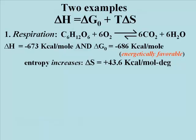Here are two familiar examples. For respiration, the enthalpy change is minus 673 kilocalories per mole of glucose burned, and the standard free energy change delta G0 works out to minus 686 kilocalories per mole of glucose burned — measured from the concentrations of CO2, oxygen, glucose, and water at equilibrium. Solving the equation delta H equals delta G0 plus T delta S for delta S gives plus 43.6 kilocalories per mole degree. Note that the units of entropy are kilocalories per mole degree, reflecting that entropy is temperature dependent. In solving for delta S, we use 298 degrees Kelvin as the standard temperature.